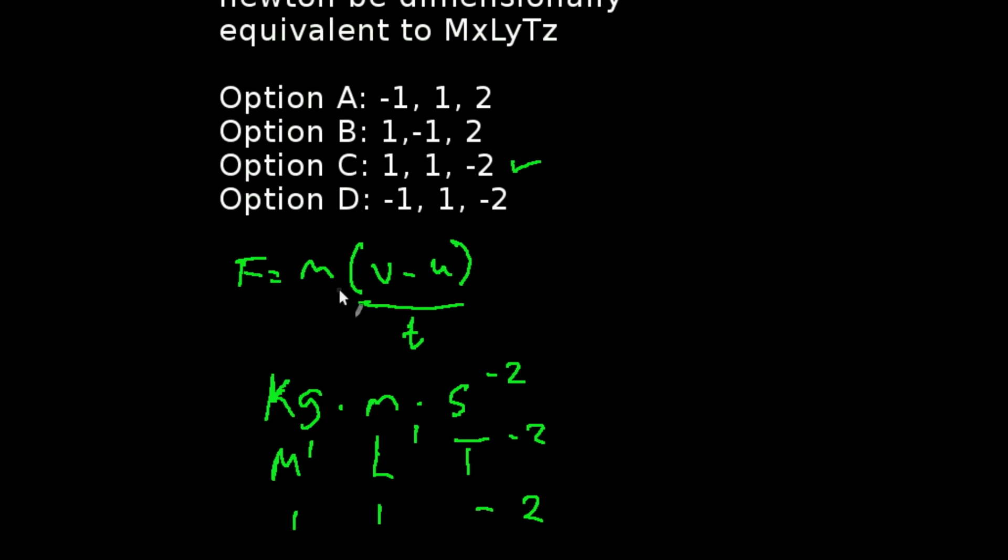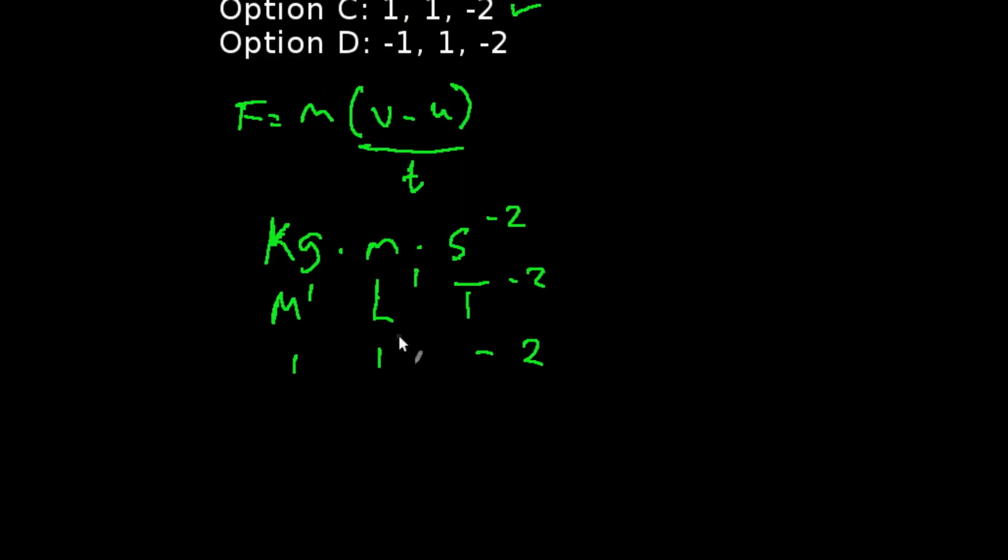We have our force to be mass times acceleration, which is change in velocity over time here. So we have mass here in kg, we have our length in meters and our time in seconds. So if we look at this carefully, we're going to be having M raised to the power 1, L raised to the power 1, and T raised to the power minus 2. And that will give us 1, 1, or minus 2 according to their powers.